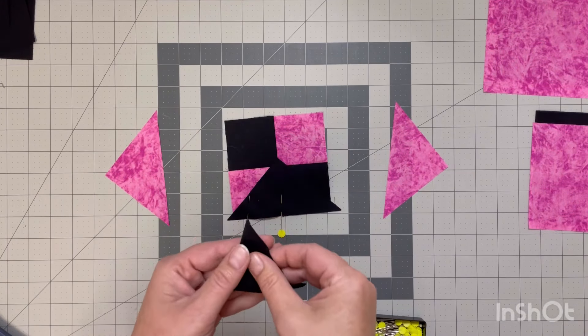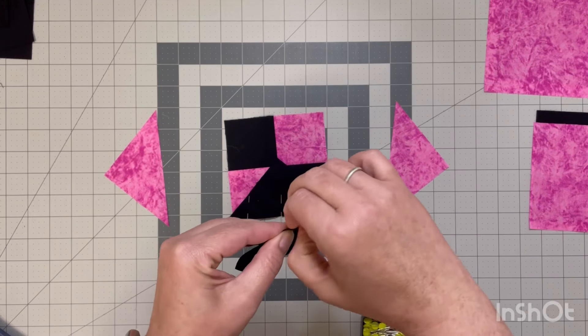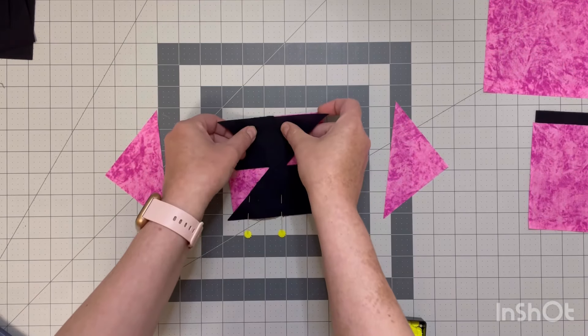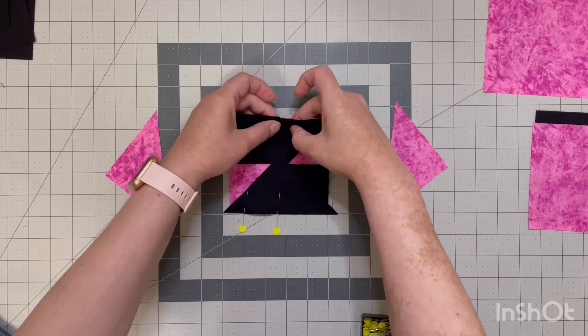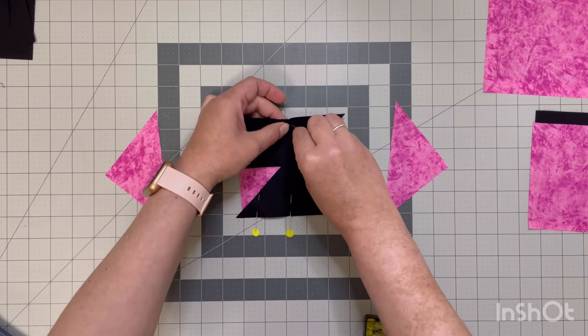Now we need to take the next black triangle and make sure that we are putting it on the opposite side. I like to pin both of mine on at the same time, that way I know I'm not going to accidentally sew it on the wrong side, because yes that's something that I would totally do. I'm just going to line this up here and then take it over to the sewing machine and sew it with a quarter inch seam.